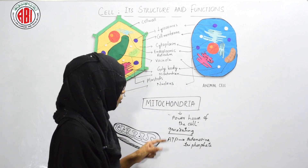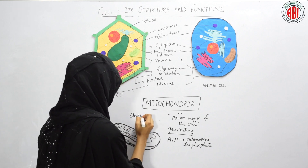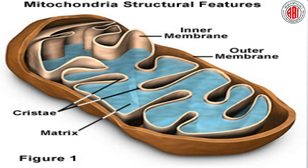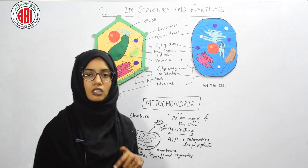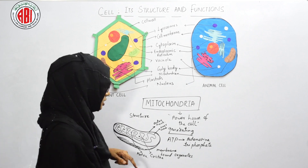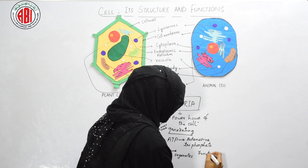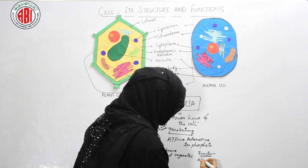Now let's see the structure of mitochondria. Mitochondria is a membrane-bound organelle. Its structure shows two membranes: the outer membrane and the inner membrane. The outer membrane is porous in nature, whereas the inner membrane shows some foldings called cristae. The space between these foldings is known as the matrix, which provides the surface to carry out metabolic and cellular activities.